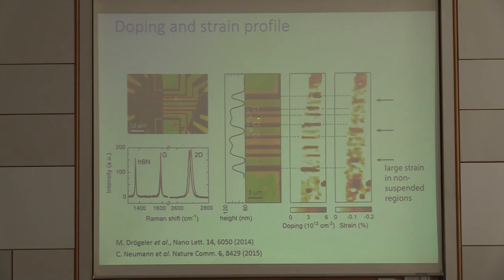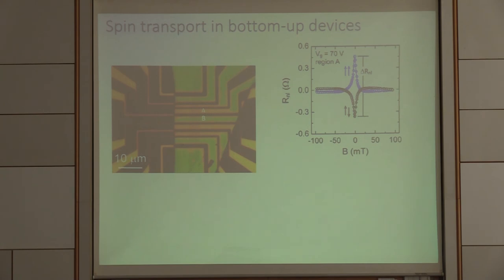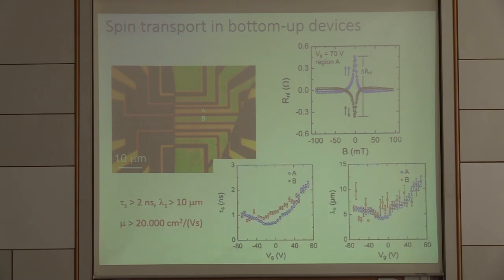I show you now data from this channel A, which is this part here, and the B, so the suspended and non suspended. These are the two regions I will show you next. And this here is now such a Hanle curve from the suspended region. You see again the Hanle curve for having the parallel aligned configuration of injector and detector and the anti-parallel. And again we can do this fitting procedure and we can get out the spin lifetime.